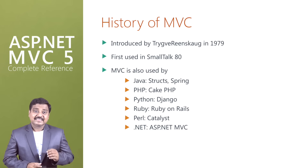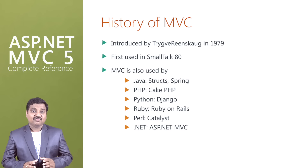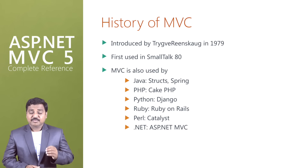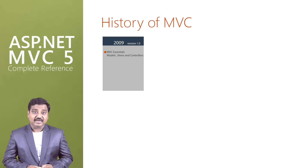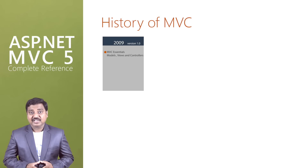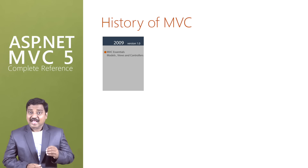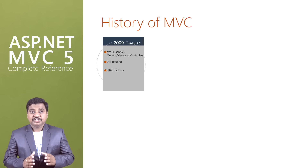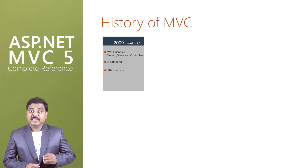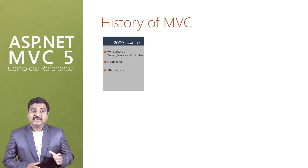Now let us understand the history of ASP.NET MVC. ASP.NET MVC 1.0 was first introduced in 2009 with the basic MVC essential features such as model, views, and controllers. It has support for URL routing, HTTP helpers for providing the user interface, and the model binding concept.